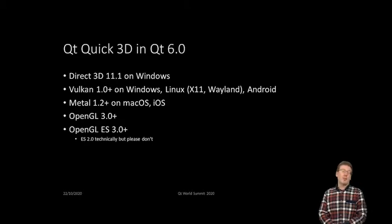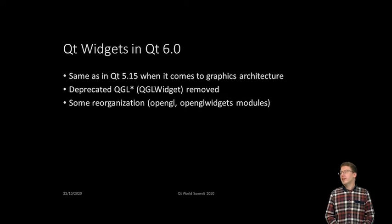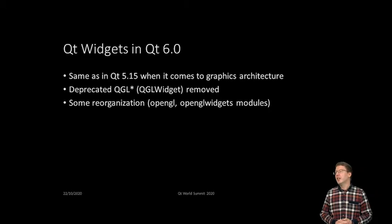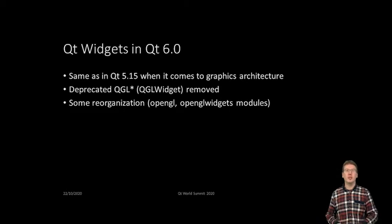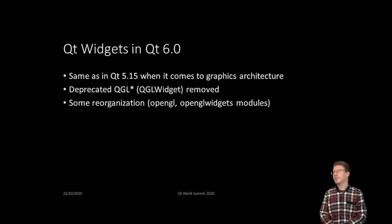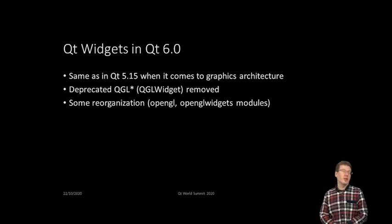What about widgets? Things are mostly the same when it comes to the graphics architecture. There is a certain reorganization — QOpenGLWidget now lives in its own module, which is very simple. You probably need to pull in a new module in your QMake or CMake project files. The deprecated functionality from Qt 4 times — like QGLWidget and everything starting with QGL, which had been deprecated for a long time — is now gone.